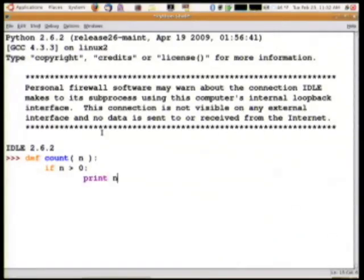Actually I'll print first. First, I'll print n, then I'm going to call count, which is myself, and I'm going to give the new version of count n minus 1 as its parameter. Now, otherwise, if n is not bigger than 0, I'm just going to print done.